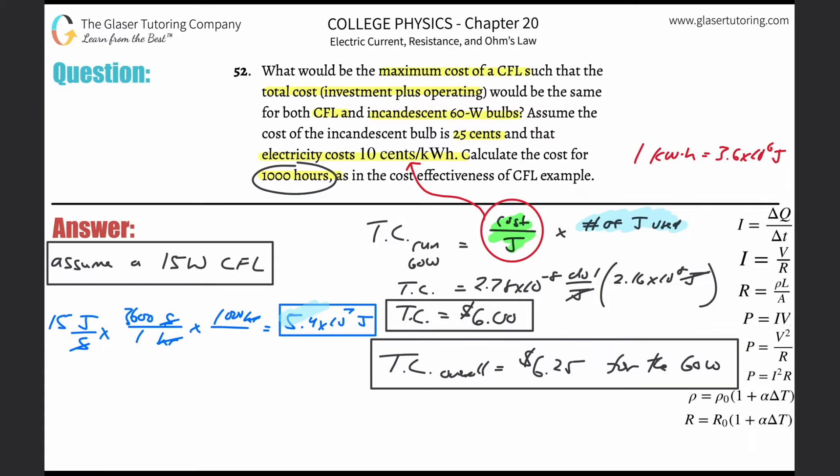This is how many joules are going to be utilized. The cost per joule hasn't changed. You're still being charged by the same electric utility. So I can now simply find that total cost of operating it. This is the 2.78 times 10 to the negative eight, then we're going to multiply that by the new value, 5.4 times 10 to the seventh joules. So the total cost here will be equal to 2.78 times 10 to the minus eight multiplied by 5.4 times 10 to the seventh. And we come up with a value of $1.50. That's how much it costs to operate it.